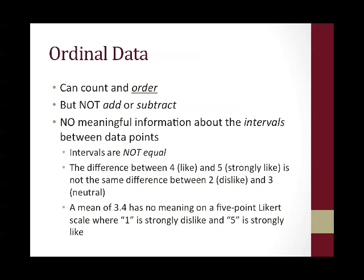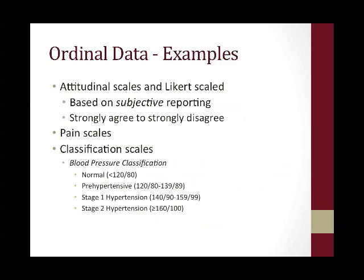This has implications for statistical analyses. There is also no meaningful information about the intervals between data points when you're dealing with ordinal data — the intervals are not equal. For example, the difference between 4 (like) and 5 (strongly like) is not necessarily the same as the difference between 2 (dislike) and 3 (neutral). If you add up figures from a number of patients and create a mean, you wouldn't have anything meaningful — a mean of 3.4 really has no meaning on a 5-point Likert scale where 1 is strongly dislike and 5 is strongly like, because 3.4 does not correspond with any category. Other examples of ordinal data include attitudinal scales and Likert scales, which are often based on subjective reporting — strongly agree to strongly disagree, strongly like to strongly dislike.